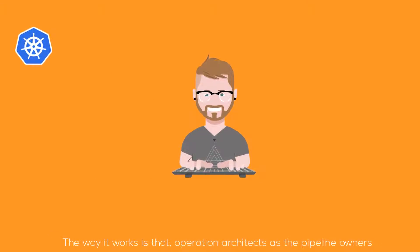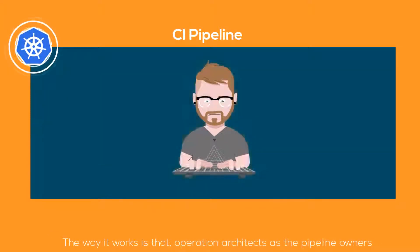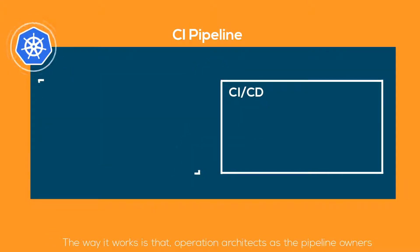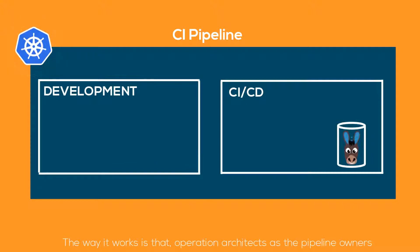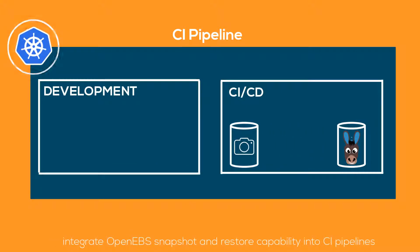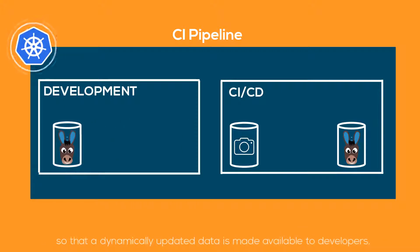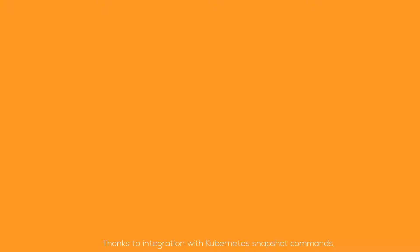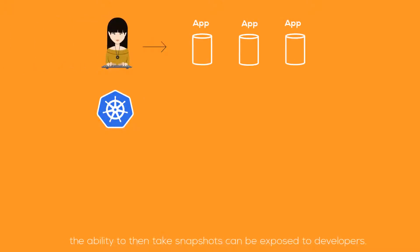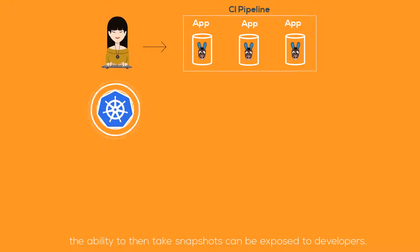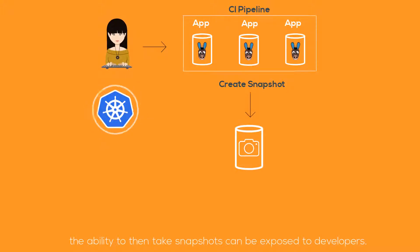The way it works is that operation architects as the pipeline owners integrate OpenEBS snapshot and restore capability into CI pipelines so that dynamically updated data is made available to developers. Thanks to integration with Kubernetes snapshot commands, the ability to take snapshots can be exposed to developers.